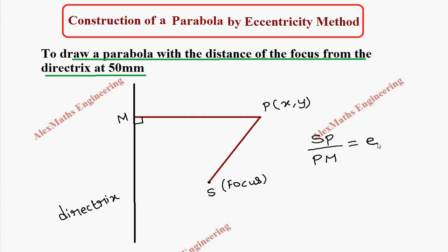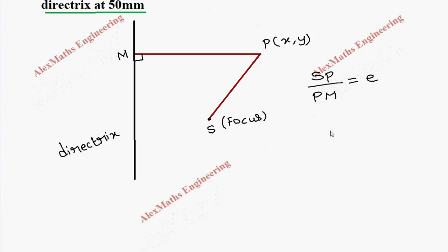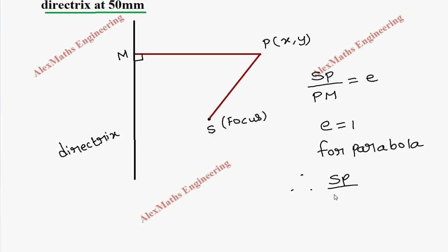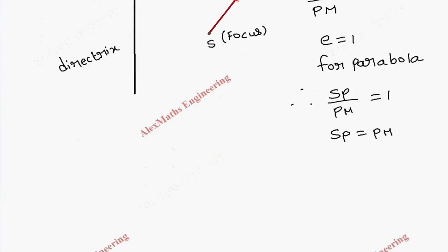In the case of a parabola, the value of eccentricity E is 1. Therefore when we put E = 1, we get SP by PM equal to 1, which means SP equals PM. This indicates that these two distances are equal in a parabola.